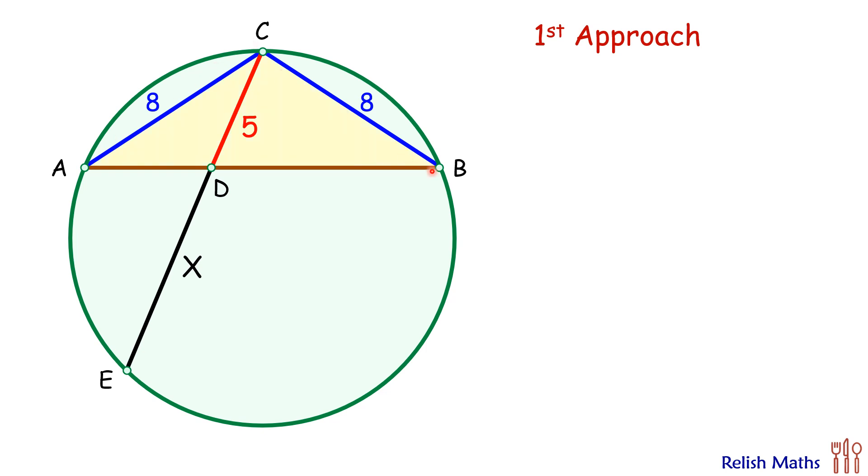Here the triangle ACB is isosceles triangle. So if this angle is alpha then this angle will also be alpha degrees. Let's join this EB.